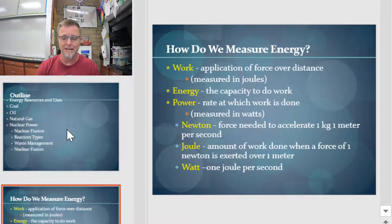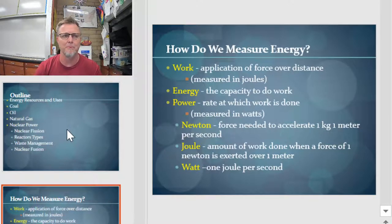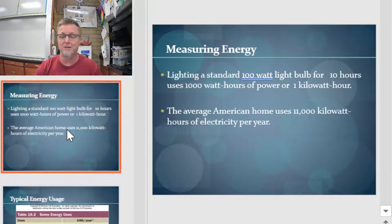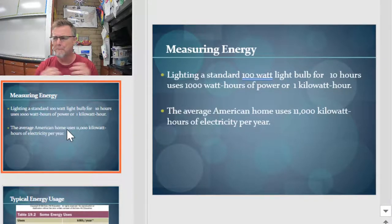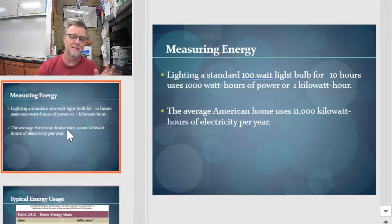Watts are basically a joule per second. A joule is the amount of work done when a force of one Newton is exerted over one meter. We measure energy in a lot of different ways. Probably the one you're most familiar with is a kilowatt, because PG&E talks about it all the time — like how many kilowatts of power does your house use? If you light a standard 100-watt light bulb for 10 hours, it's going to use a thousand watt-hours of power, or one kilowatt-hour.